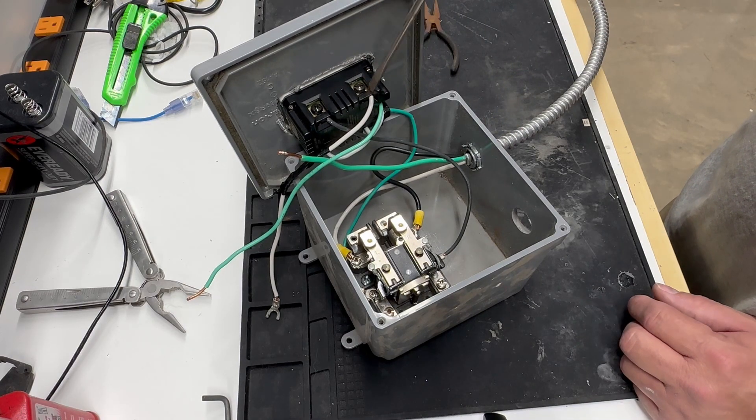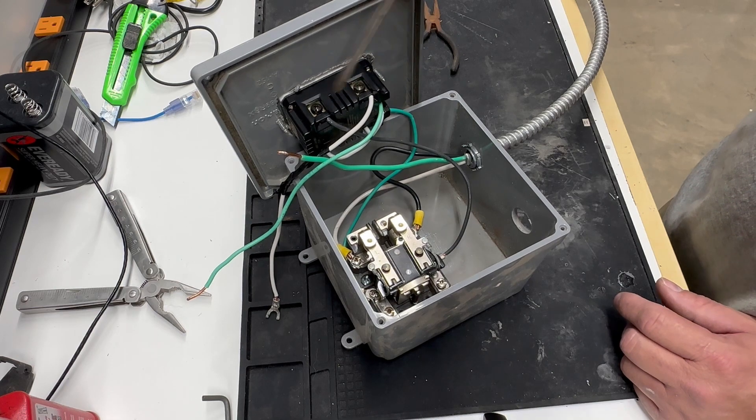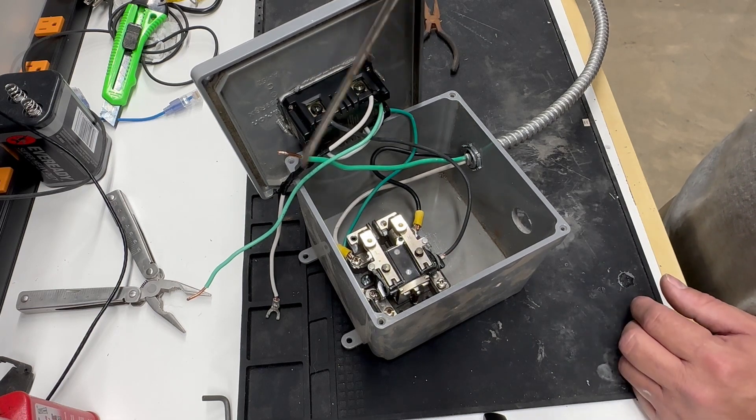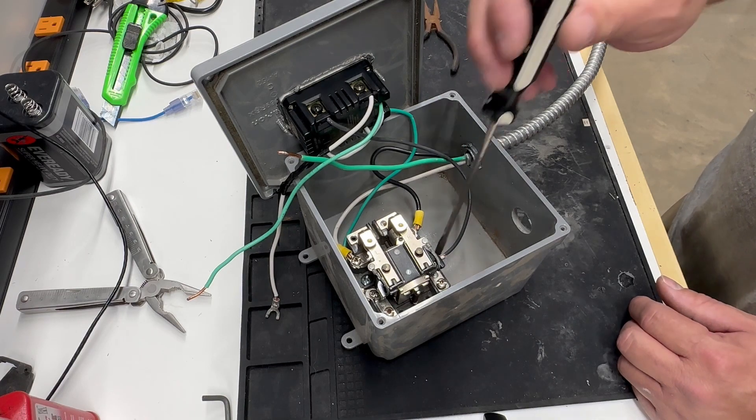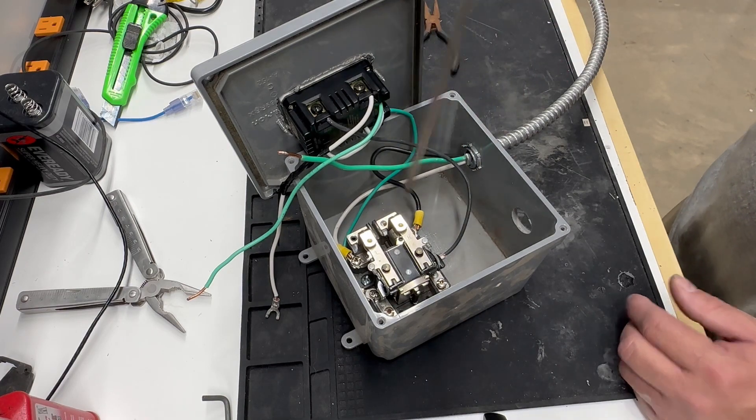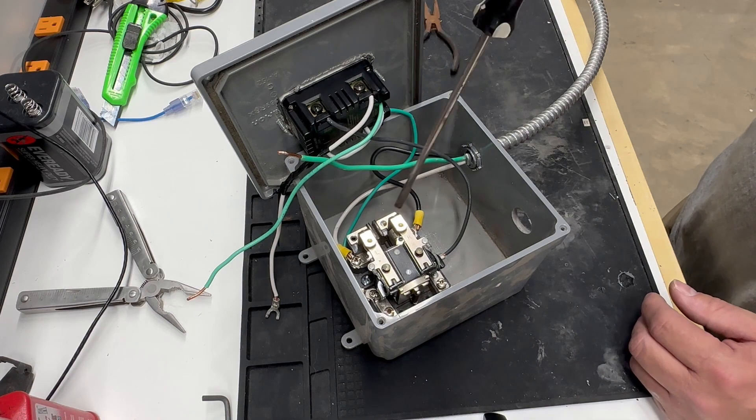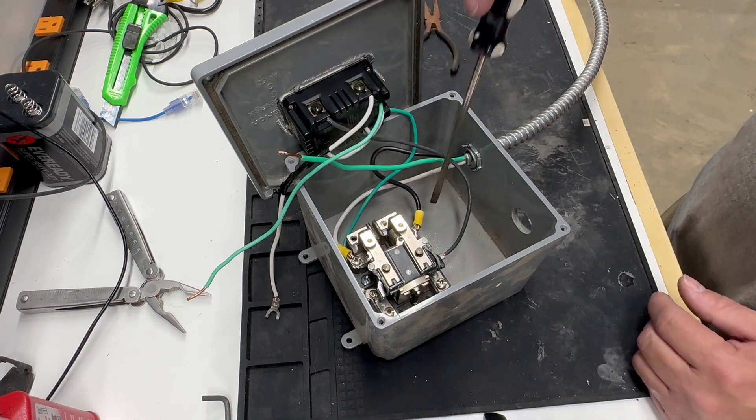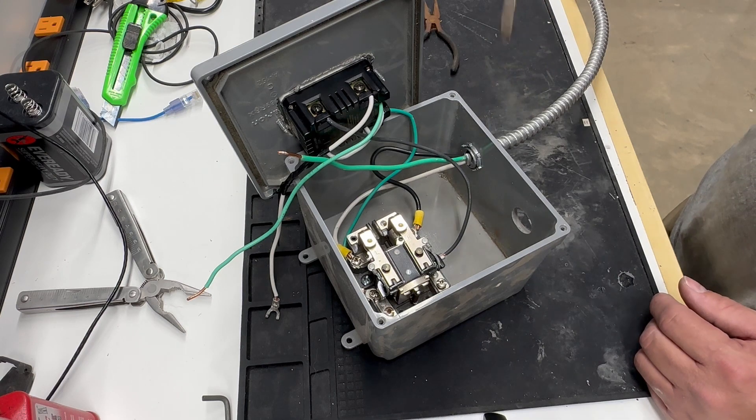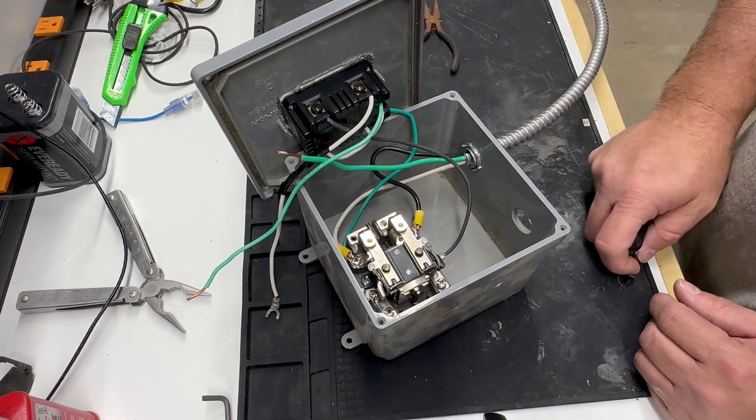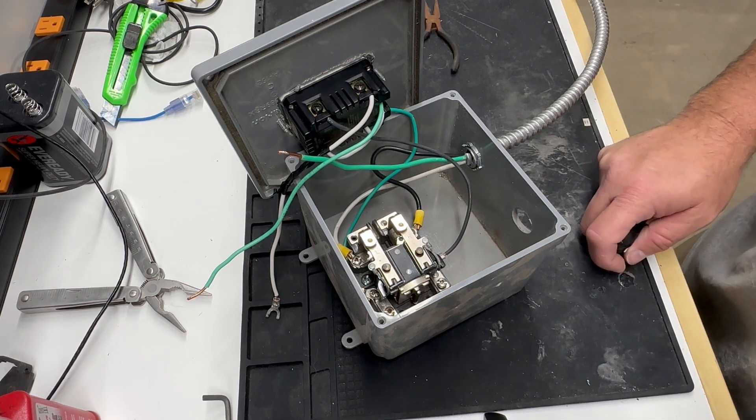In my case, I only have 220. I didn't run a neutral or the white wire, so I'm doing it this way with the ground. Basically this is already wired up because I pulled it off for the video, but we're going to go mount it to the air compressor and get it wired up to the air compressor and then we'll test it out.